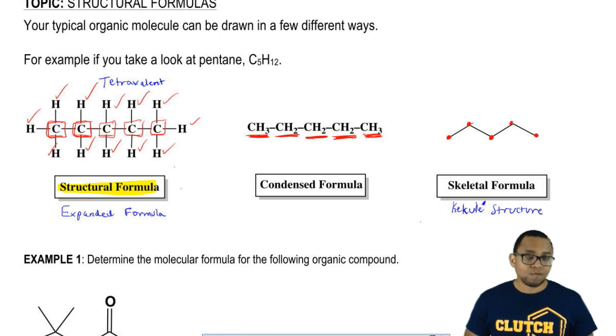So again, when it comes to our skeletal formula, carbons are invisible and the hydrogens connected to them are also invisible. The only way I could show those hydrogens is if those hydrogens were connected to something different from carbon, such as a halogen, sulfur, phosphorus, oxygen, or nitrogen.